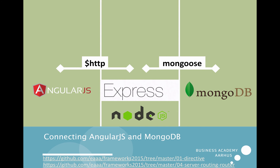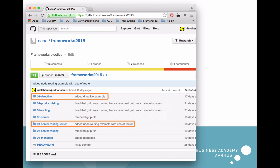In this presentation I will build on some of the code I've made already. I will combine two applications: one client-side application, that means an Angular application, and then a server application, and combine these two to connect Angular with MongoDB. At GitHub you can find the two applications. The 01 directive is the client side, meaning the Angular app. And 04, server routing router, is my server-side application.